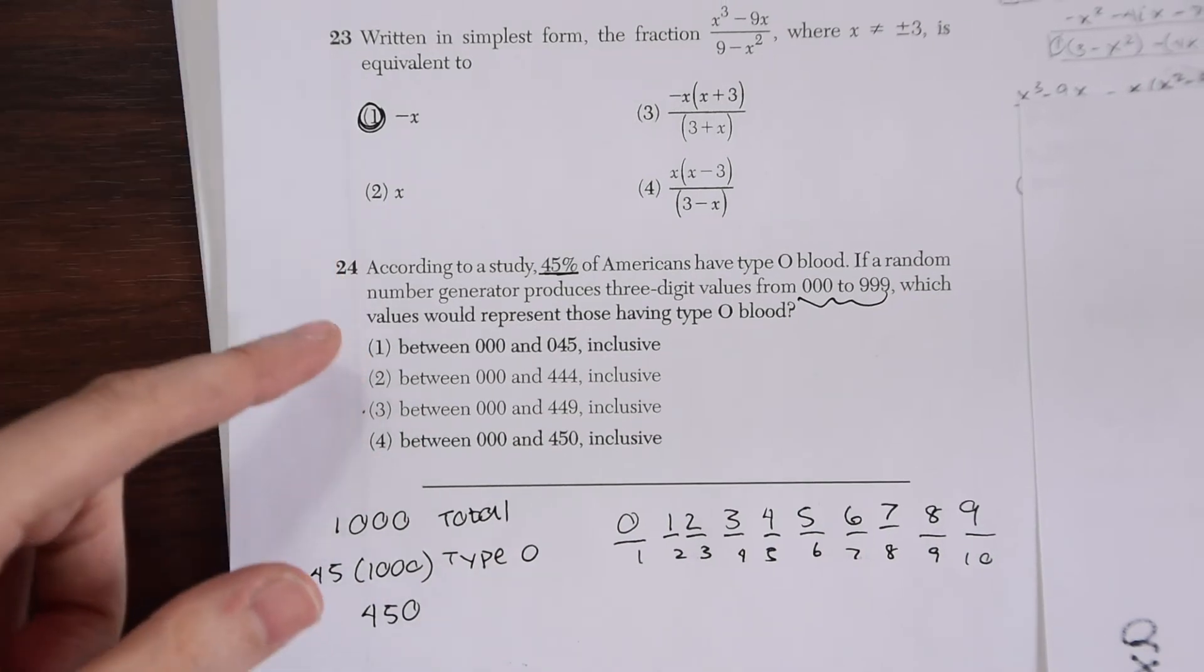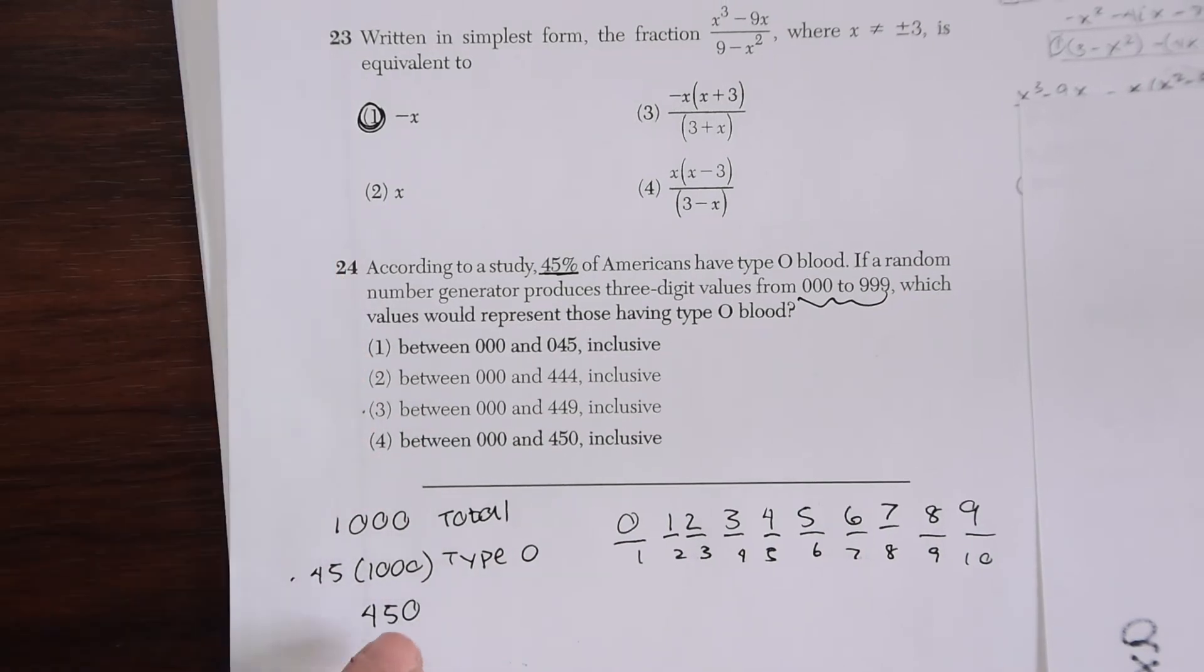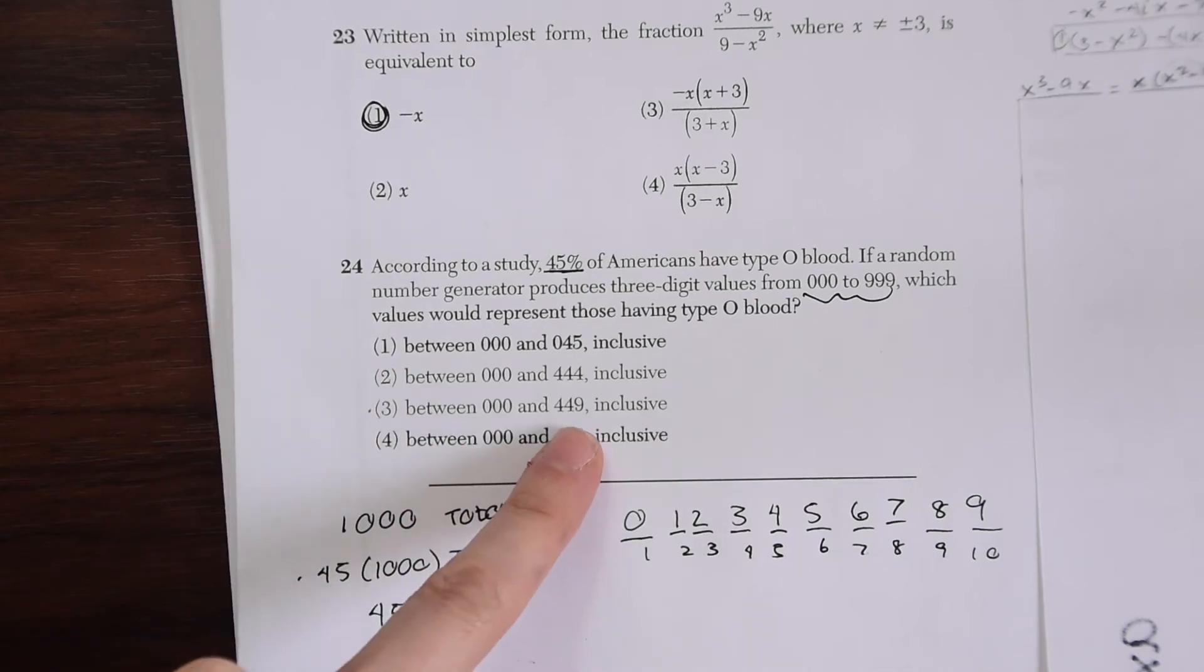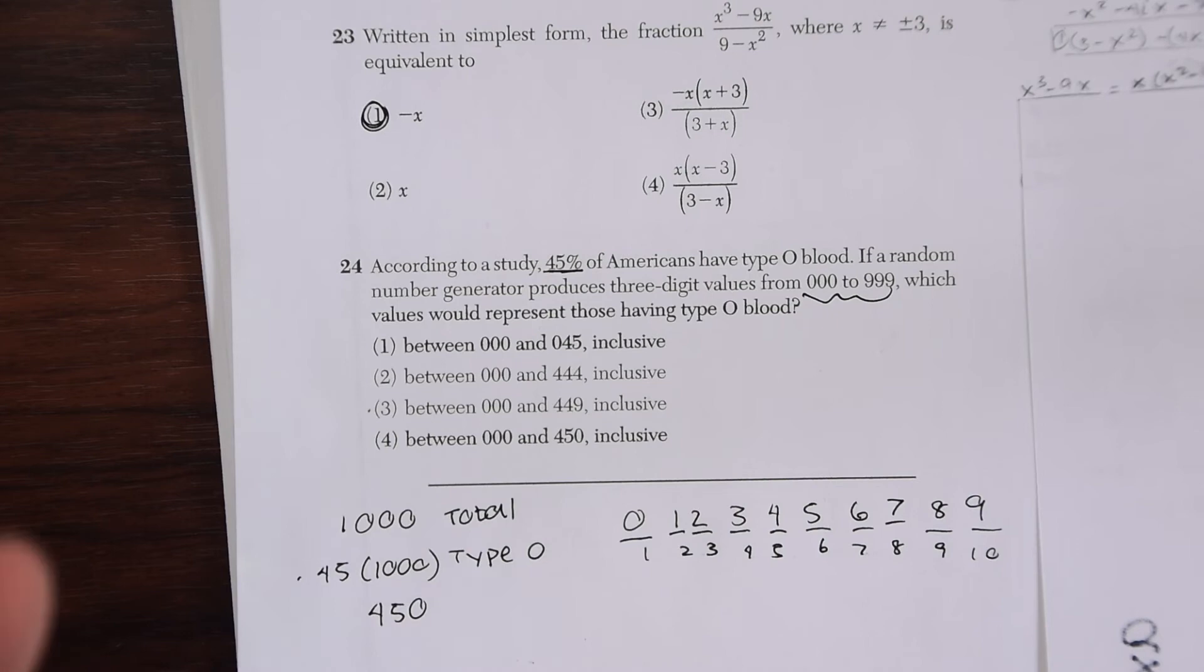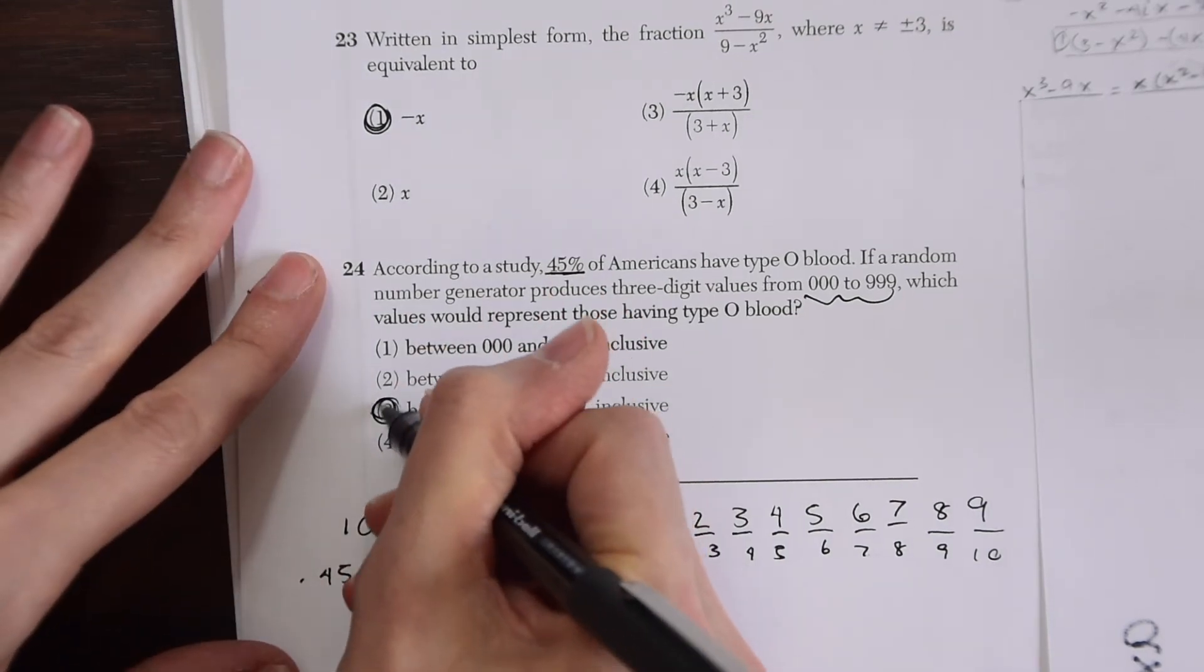When we have these different numbers to choose from and we want 450 numbers we're going to want to look for 449 which is one less than 450. So that is going to be our answer choice three.